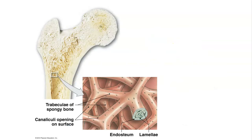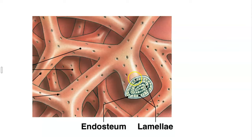Taking a look at the microscopic structure of spongy bone, spongy bone is made out of little pieces called trabeculae. Taking a closer look at a trabecula, we can see that it is also made out of concentric rings of matrix called lamellae. The osteocytes live in between the lamellae, and we can see the canaliculi. Notice, however, that it's not a true osteon — it doesn't have a Haversian canal. So it's a variation of what we saw in compact bone.